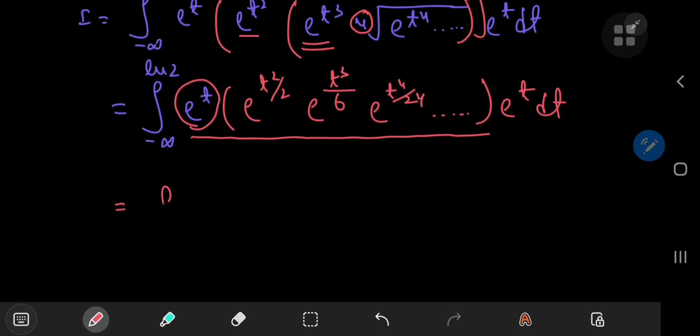And we're going to include this e to the t term as well while multiplying all of these exponential terms. Now, once you multiply the exponential terms, except for this one, I'm leaving this separately. We have the integral from negative infinity to the natural log of 2 of e to the t plus t squared by 2 plus t cubed by 6, which is 3 factorial, plus t to the 4 divided by 24, which is 4 factorial, and so on. All of this is being multiplied by another e to the t, dt.